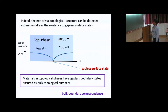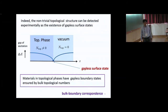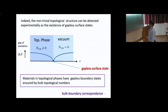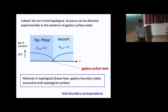Audience question: At the boundaries, we have a gapless surface state. So the actual state is inside the topological phase but located near the boundary? Speaker: Yes, the gapless state is well-localized at the boundary, just near the interface with the vacuum.